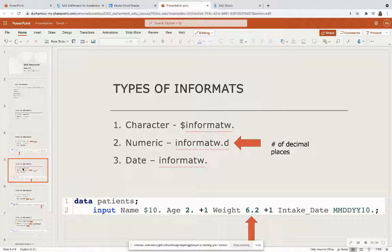Next, we have numeric informats. And numeric informats can come with a decimal place. So you can have an informat W.D or just an informat W. The width, once again, is the width of the entire number. So in this case, I have weight, that width is 6, and it has two decimal places. So I'm calling the informat 6.2.